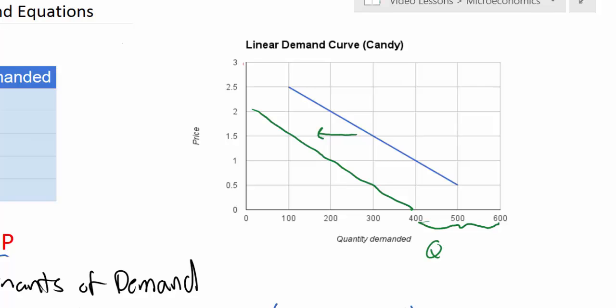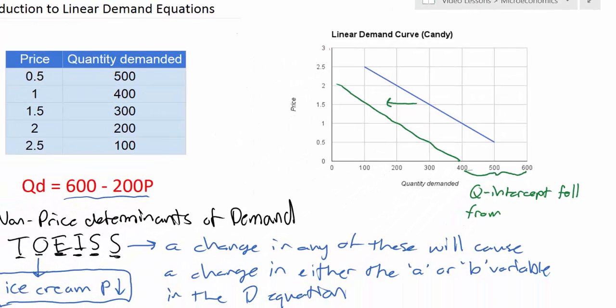So we can say the Q-intercept fell or decreased from, we know what it was before, it was 600 because that was our A variable. So it fell from 600 to 400.